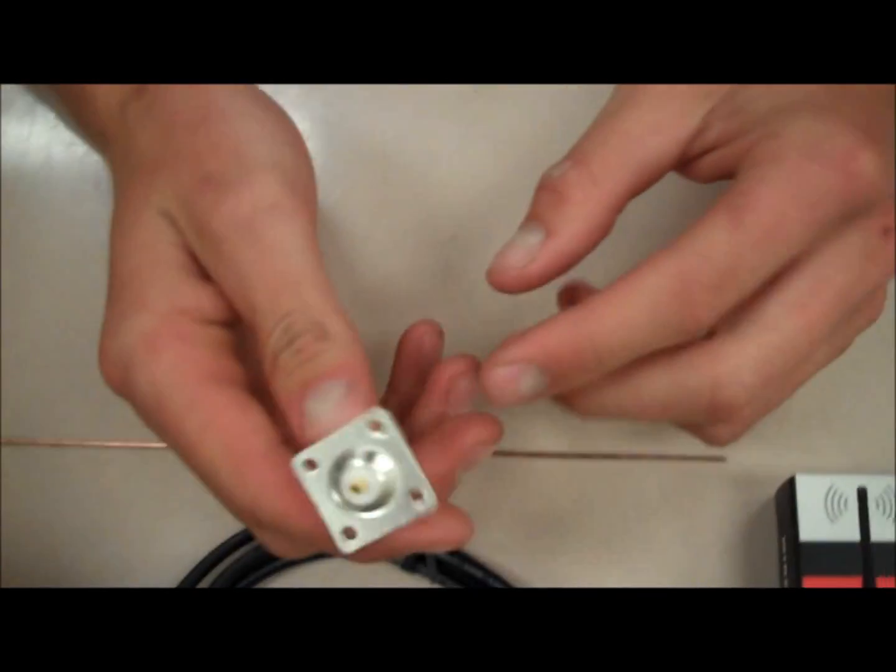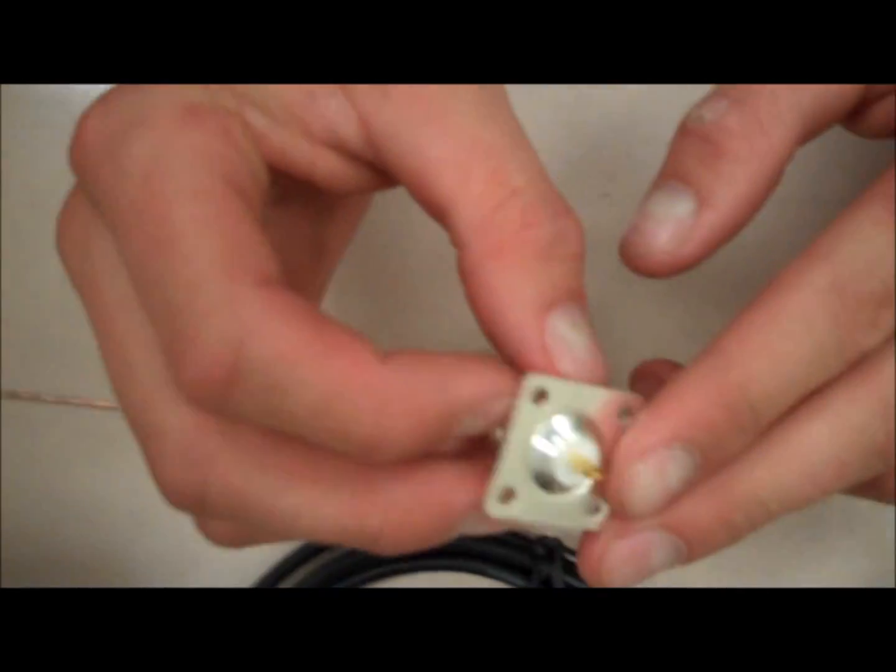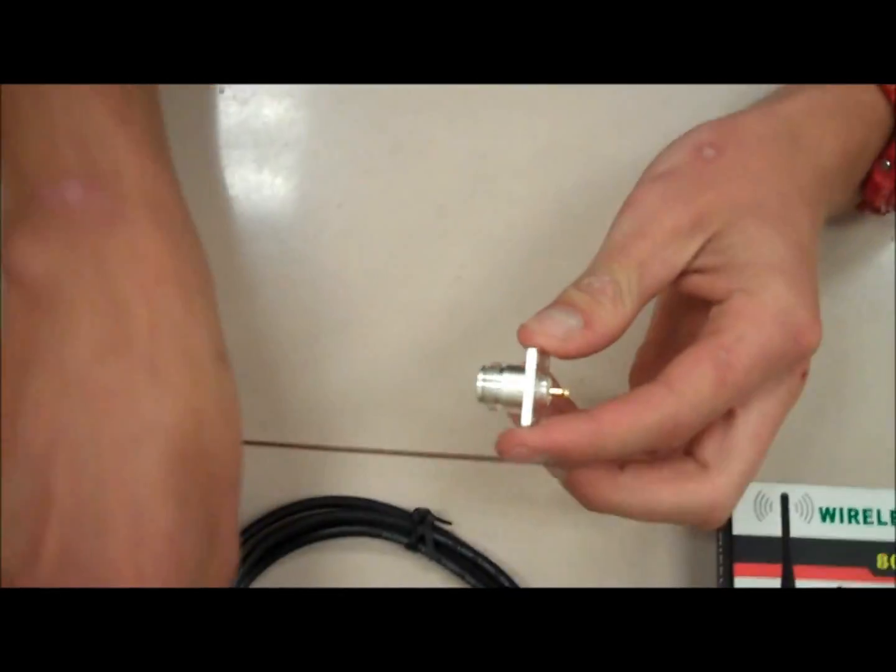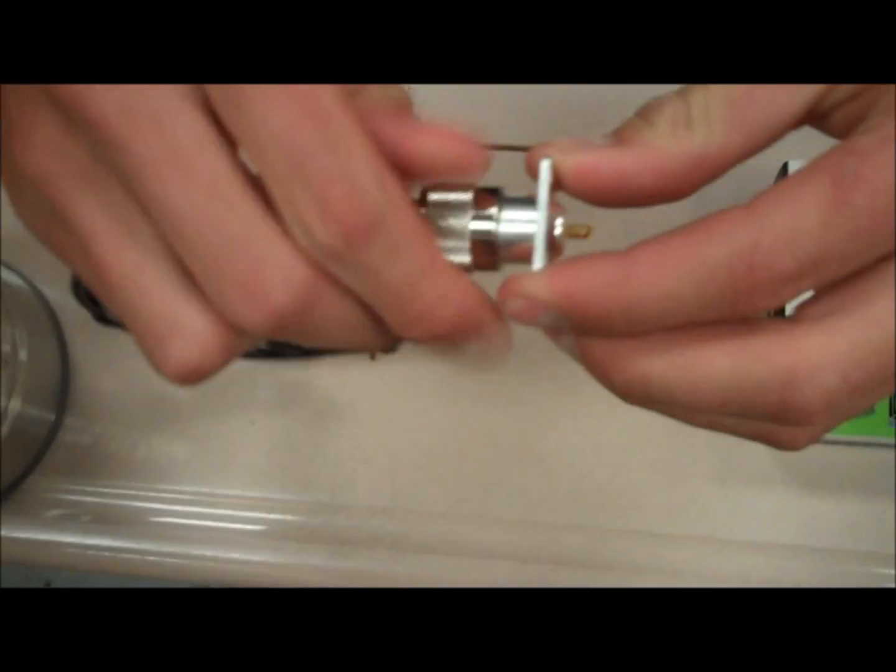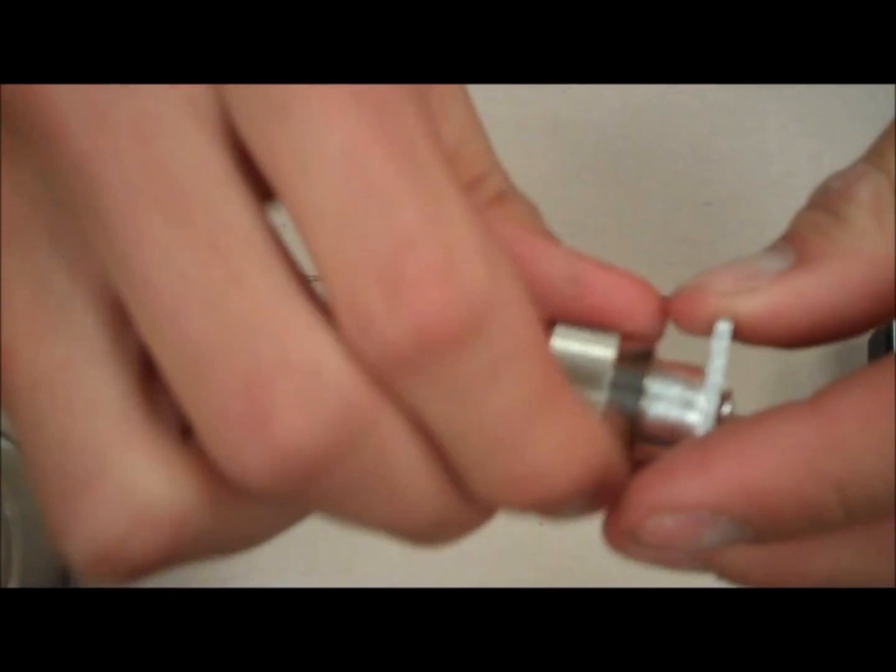The next thing we have is an N-type female chassis connector. That is going to be mounted inside the can and then it's going to screw onto the pigtail. That's going to catch the wireless in the can and then take it to your laptop.